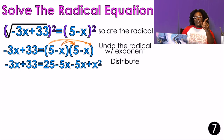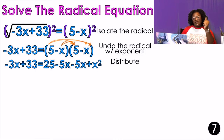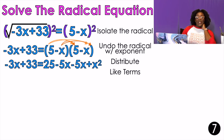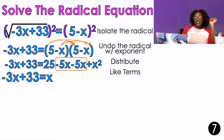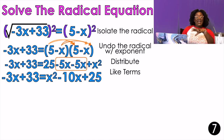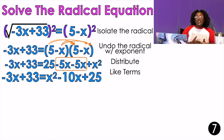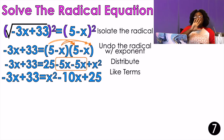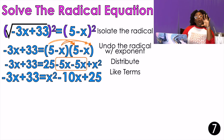So: 5 times 5 is 25, x times negative 5 is negative 5x, negative x times 5 is negative 5x, and x times x is x squared. Combining like terms gives negative 10x in the middle. I rearrange into descending order: x squared minus 10x plus 25. Notice I have a quadratic.